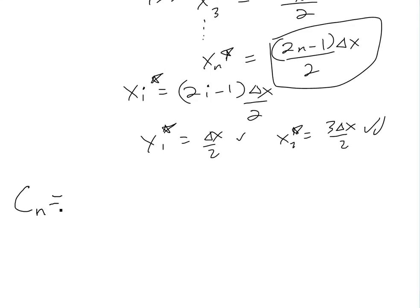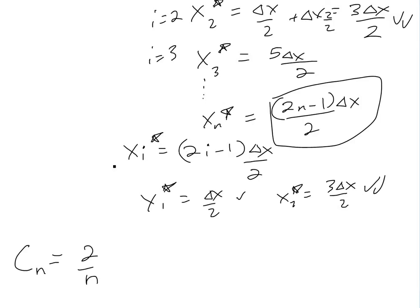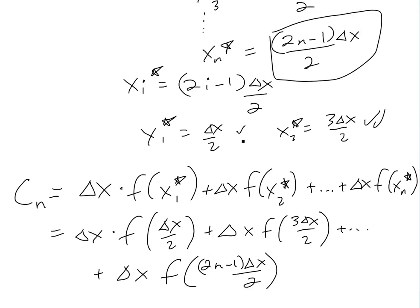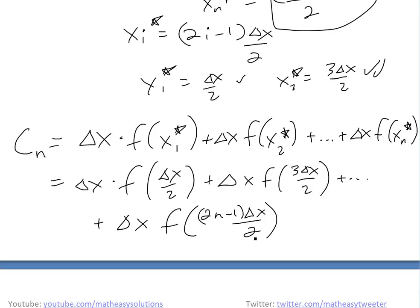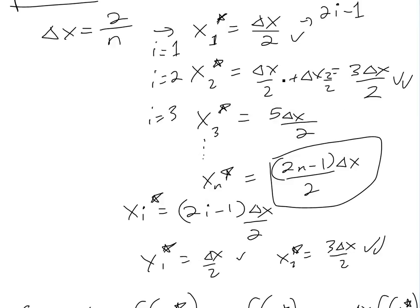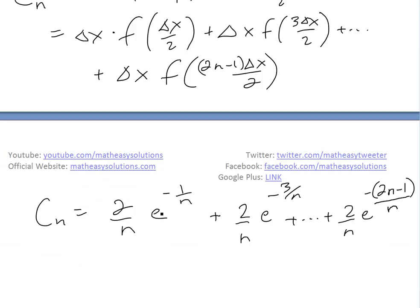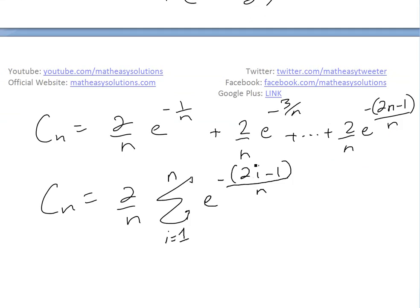So putting it all together, we call this Cn — denoting the center point we're picking. This is going to be delta x times the sum of f(x_i star) values from i=1 to n. Plugging in these x_i star values and delta x = 2 over n — the twos always cancel — so we get 2 over n times sigma from i=1 to n of e to the negative (2i minus 1) over n.